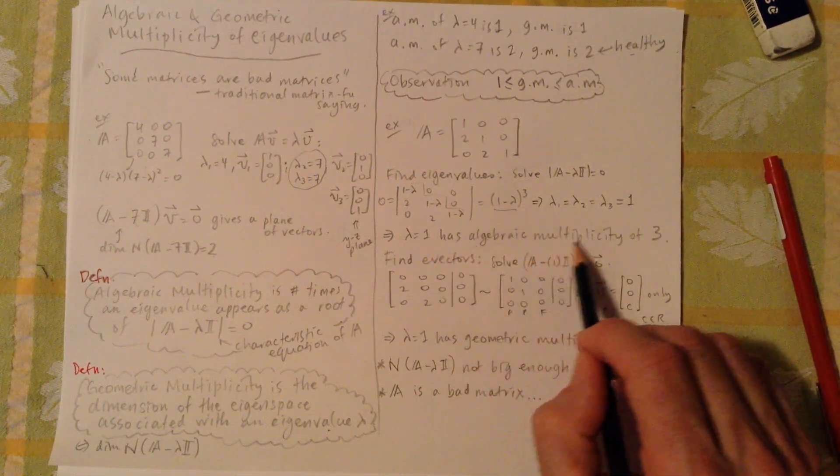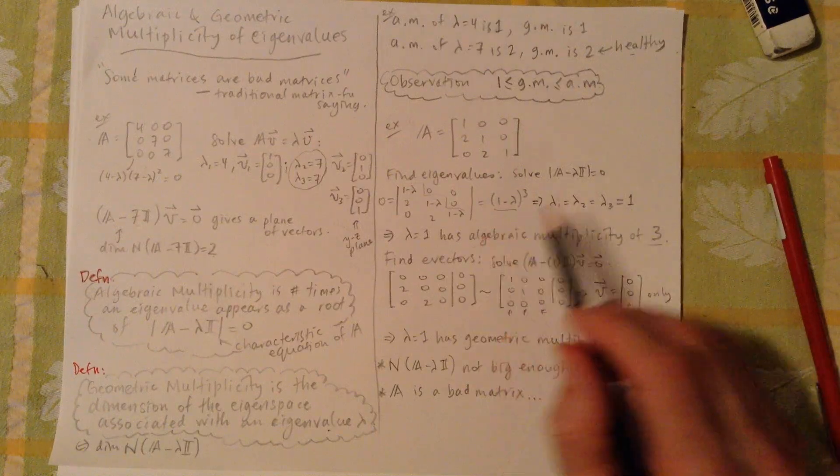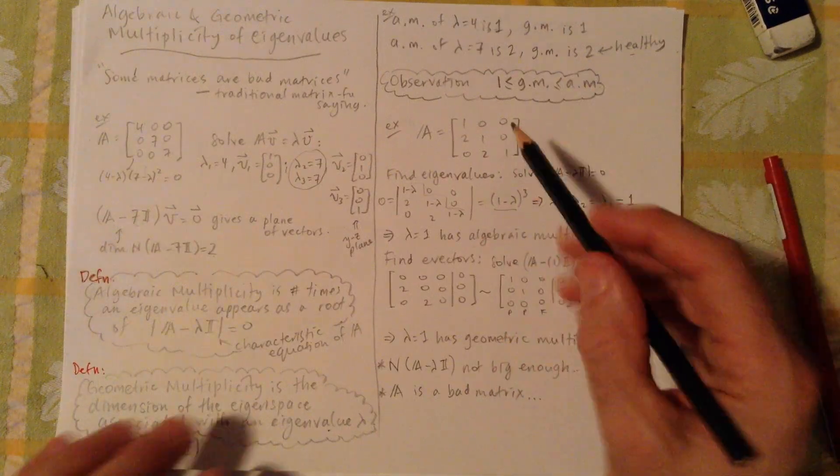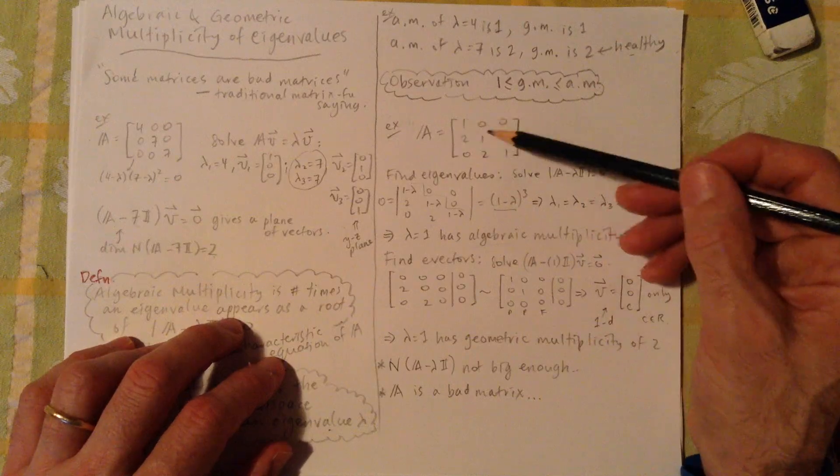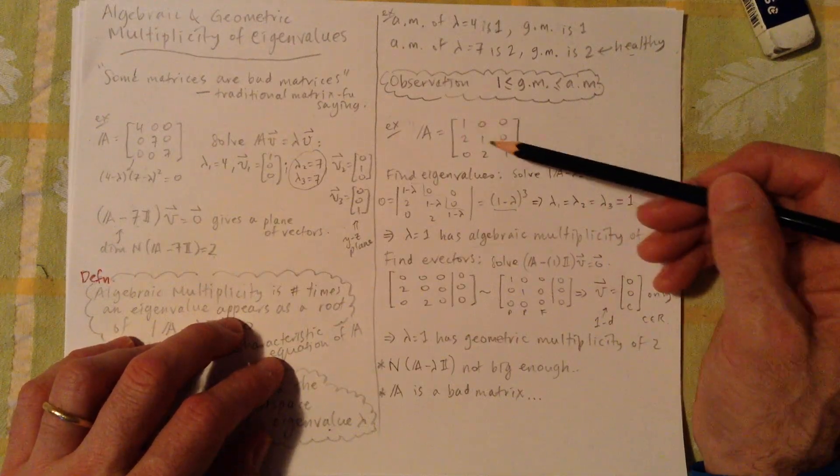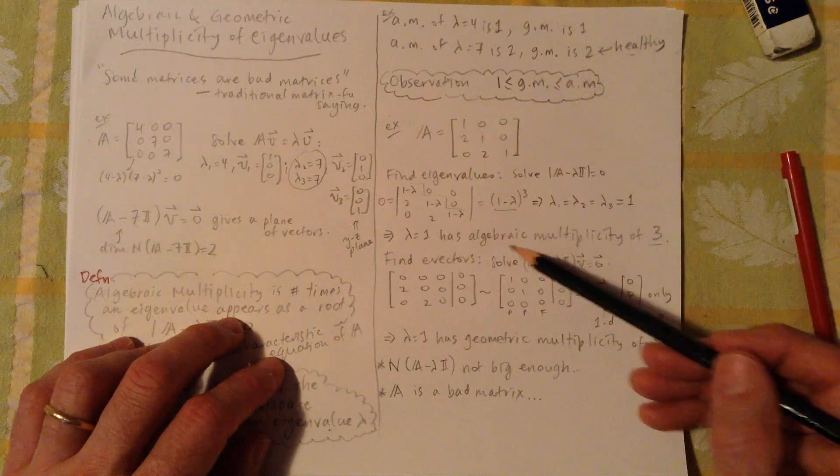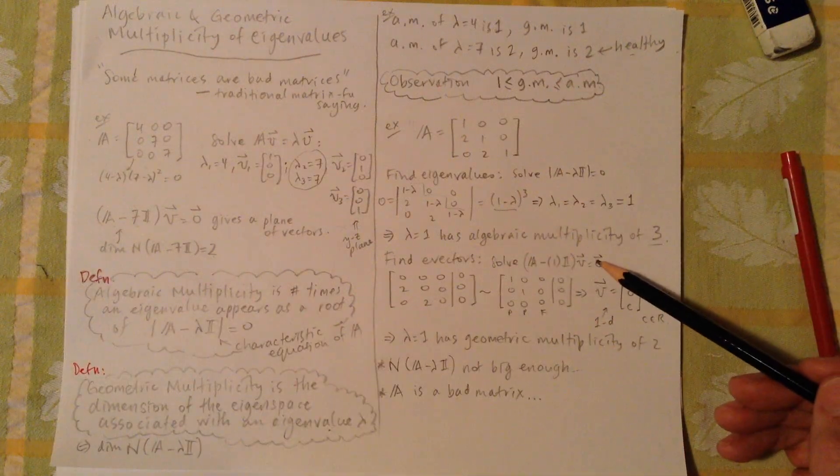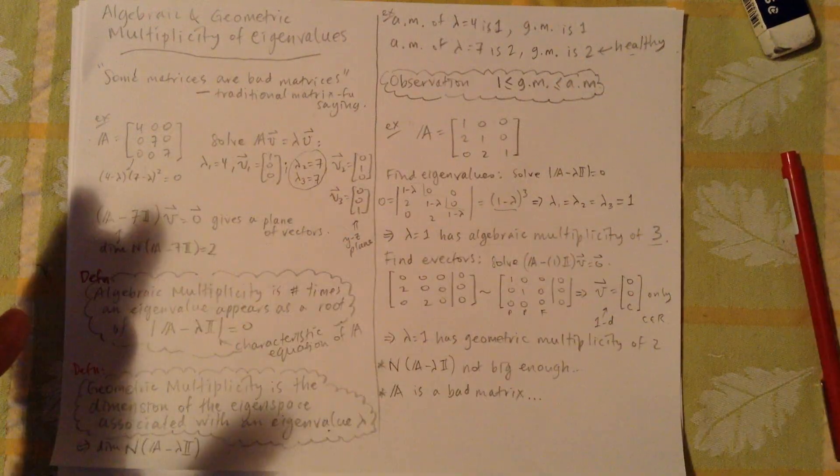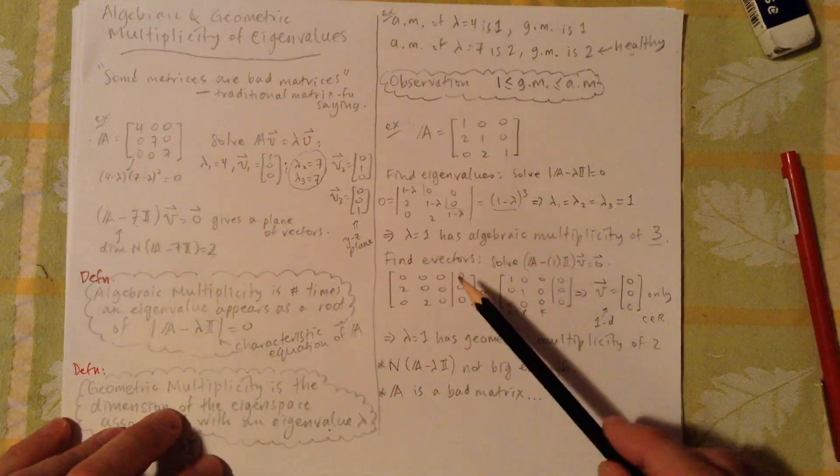So lambda one has an algebraic multiplicity of three. So that's fine. So does the identity matrix. It has three dimensions. So eigenvalue one, and it has an algebraic multiplicity of three. Because it preserves every direction, it's fine. It has a full complement of eigenvectors.